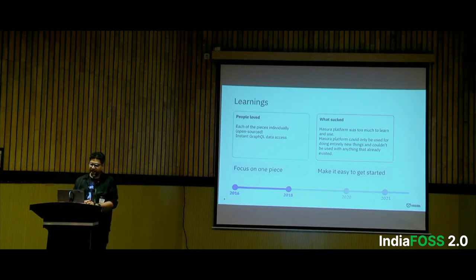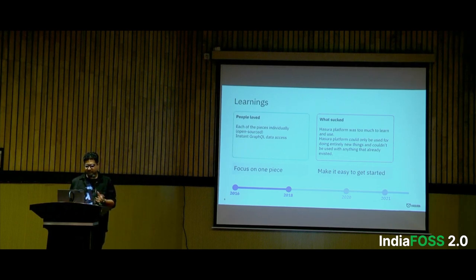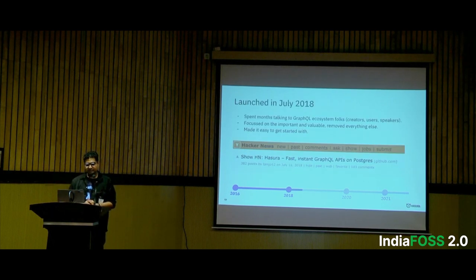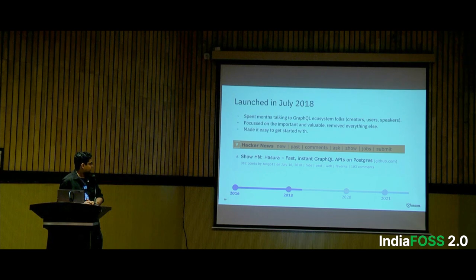They also learned that it was very difficult for users to adopt because the Hasura platform was too large and wide. It probably makes sense for new projects, but for existing projects you have to do a lot of things to make it work. So they learned from these two things, spent another few months, and launched the Hasura GraphQL Engine fully open source — making a pivotal choice to remove everything else from the stack and just focus on the GraphQL engine and data access, written in Haskell.